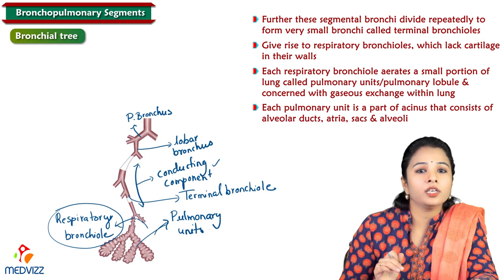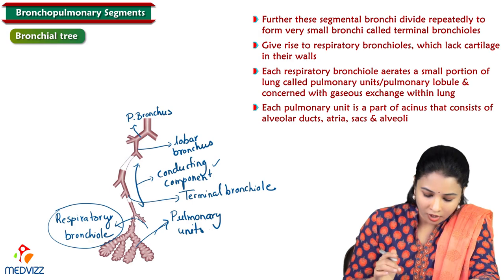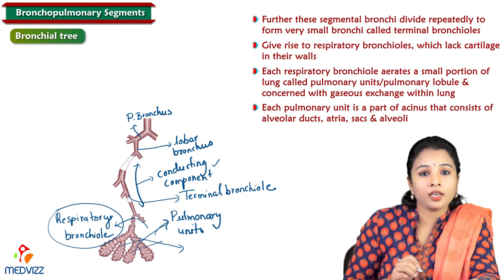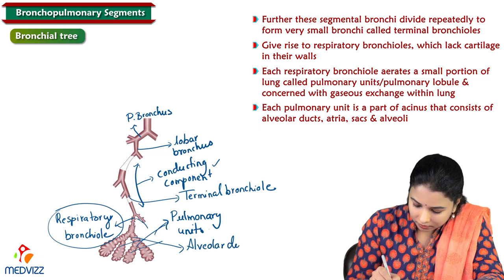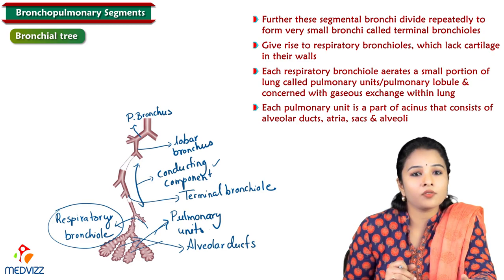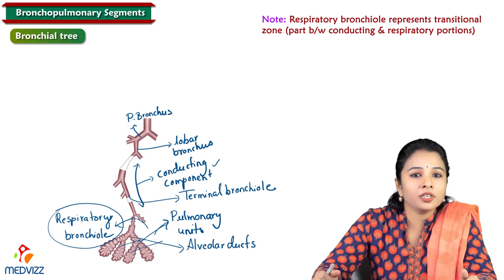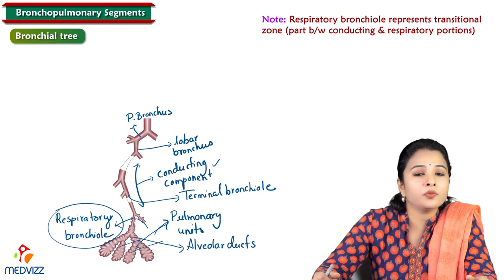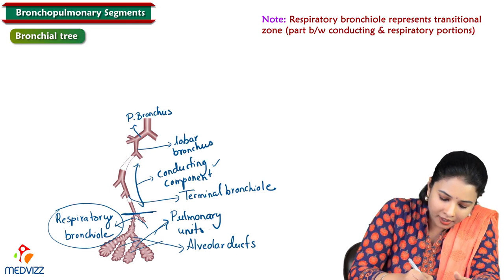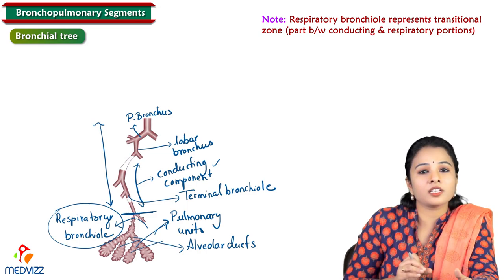Each pulmonary unit is part of an acinus, which consists of alveolar ducts, atria, alveolar sacs, and alveoli. The respiratory bronchiole represents the transitional zone between the conducting and respiratory portions of the lung.